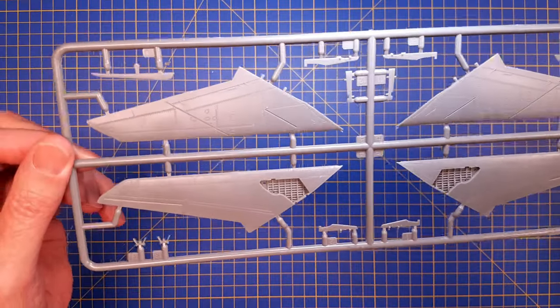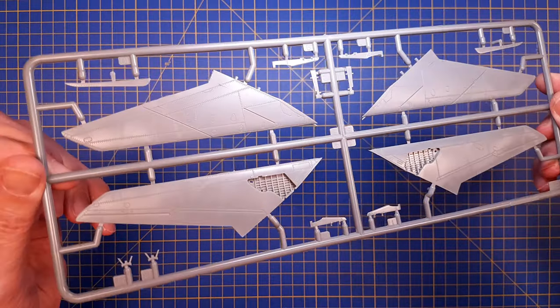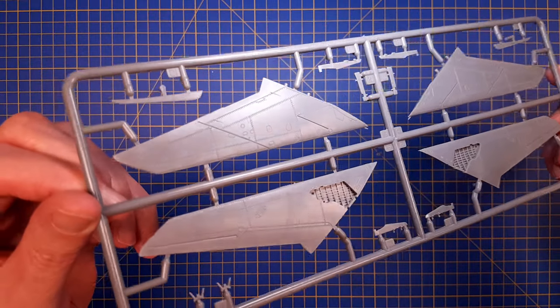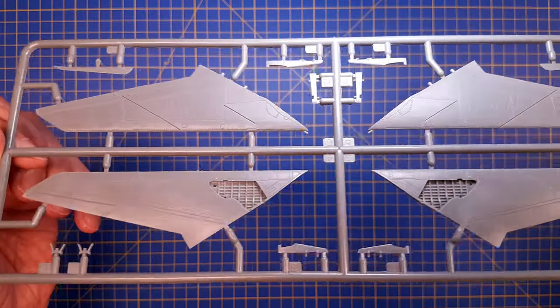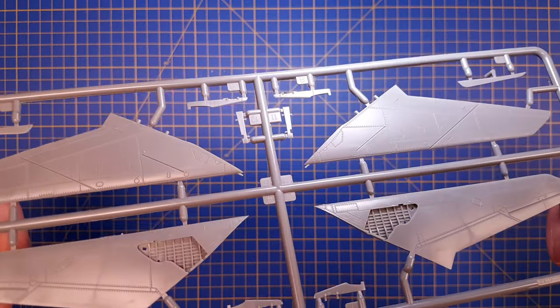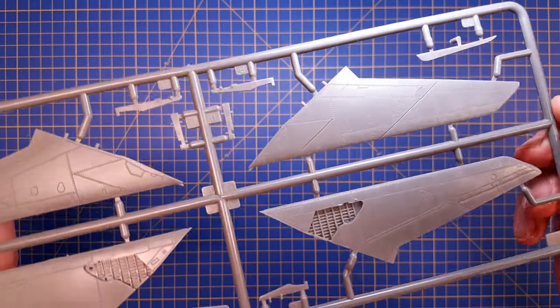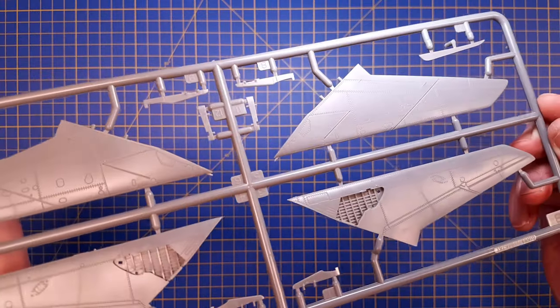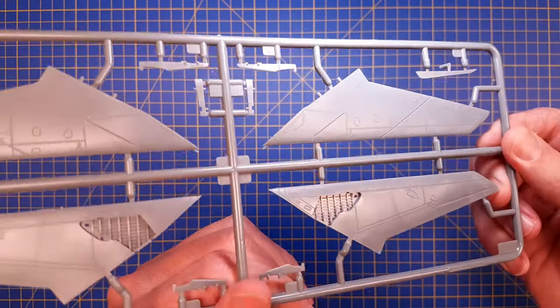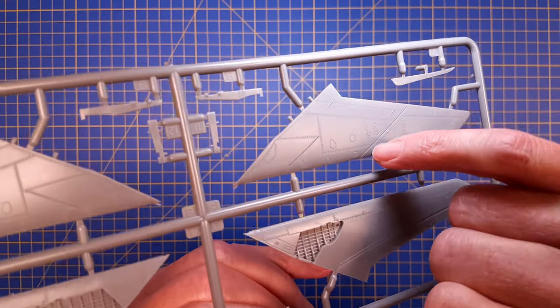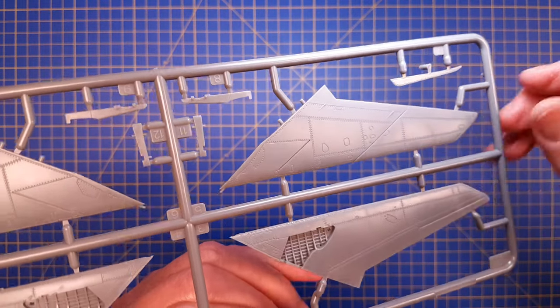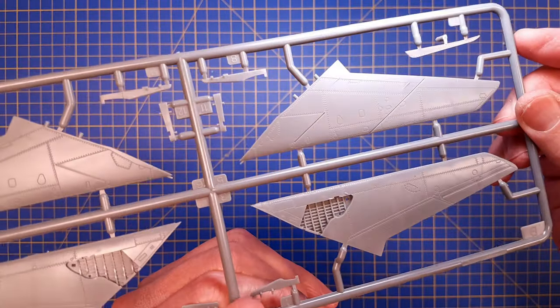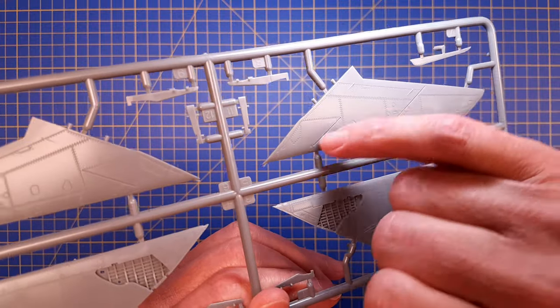Here we have the main wings, and they look really great. They have made recessions here for the wing fences in photo etch.